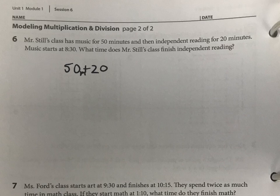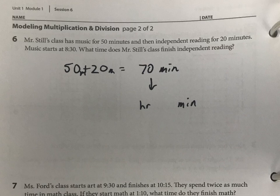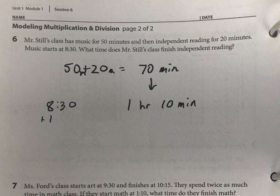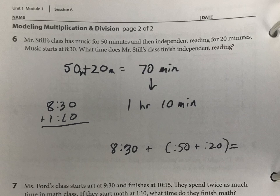You need to think about how much total time that is. You have 50 minutes plus 20 minutes, which gives you 70 minutes. The tricky thing with time is you need to split that into hours and minutes. There are 60 minutes in an hour, so that's one hour and 10 minutes. Take 8:30 and add one hour and 10 minutes — that gives you your answer. Be sure to show an equation and answer with a sentence, like 'finished reading at [time].'